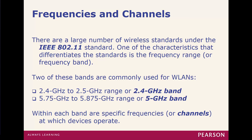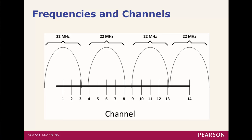In America, you need to know three specific channels — very important: 1, 6, and 11. We don't use channels 14 and above in the U.S. These three are important because they don't overlap with one another. Channel 1 will never overlap with channel 6; channel 6 will never overlap with 1 or 11. They will always be unique to one another.